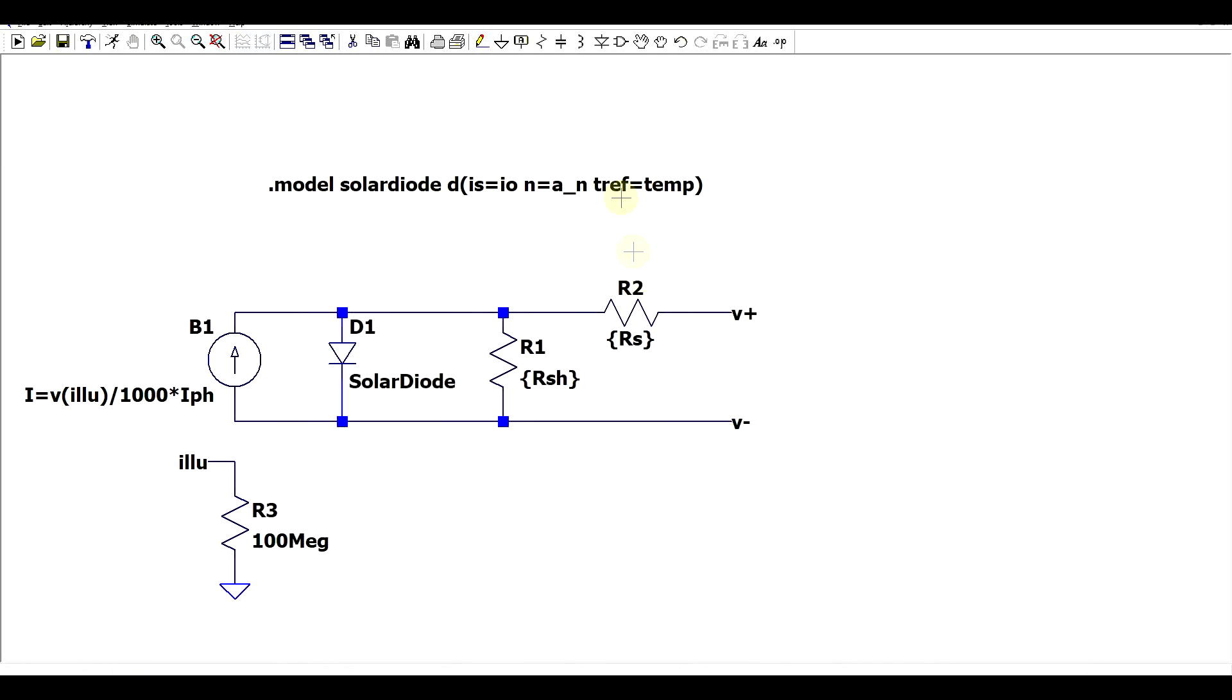And finally T ref represents the temperature at which these parameters have been calculated at and we will be equaling that to the global temperature of the simulation. Now you could use some more complex formulas but for now let's leave it like this.